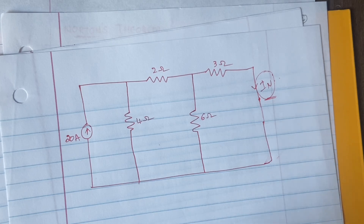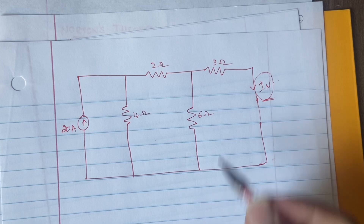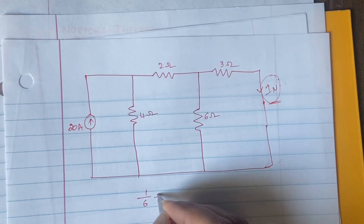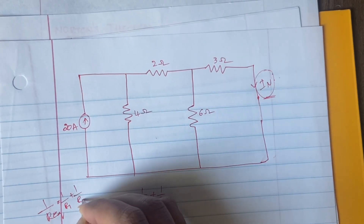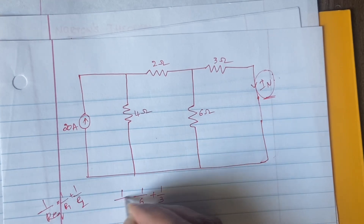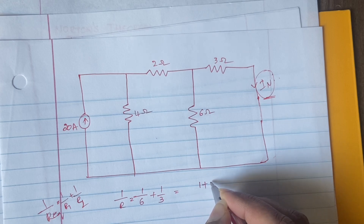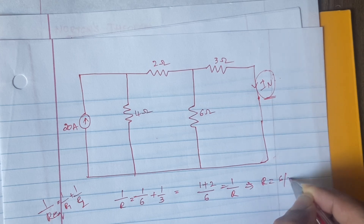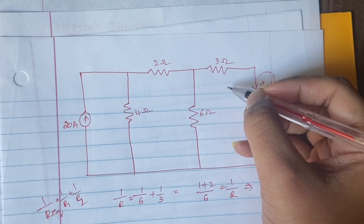To calculate IN, we apply the current divider rule. But first we need to find the equivalent resistance of the resistors. The 6-ohm and 3-ohm resistors are in parallel, so using 1/R = 1/6 + 1/3, we get 1/R = (1+2)/6 = 3/6, which means R = 6/3 = 2 ohms. The equivalent of those two parallel resistors is 2 ohms.